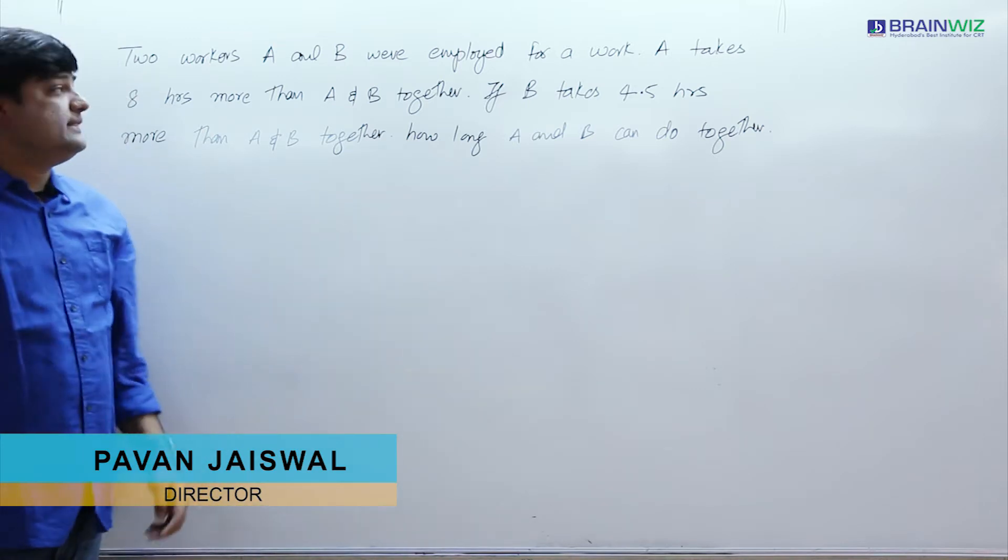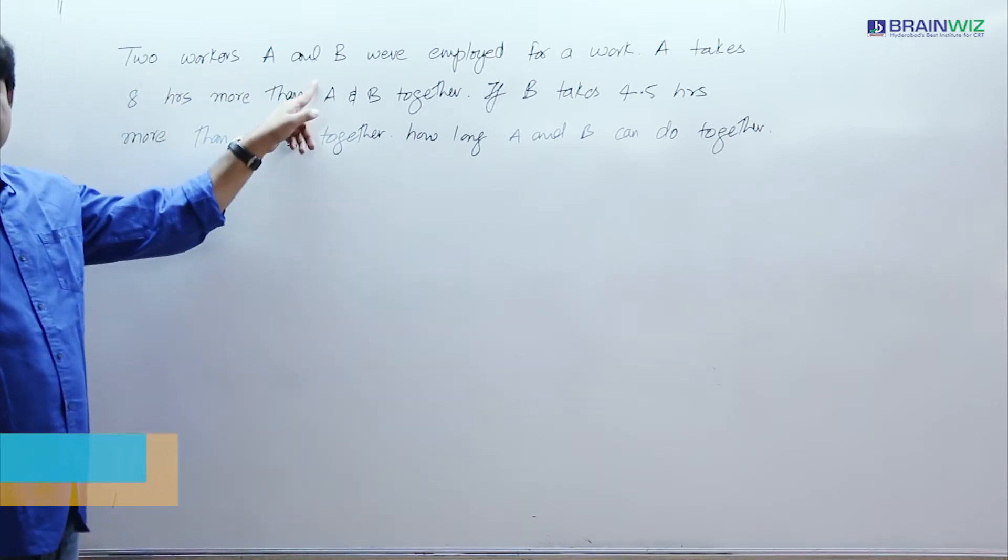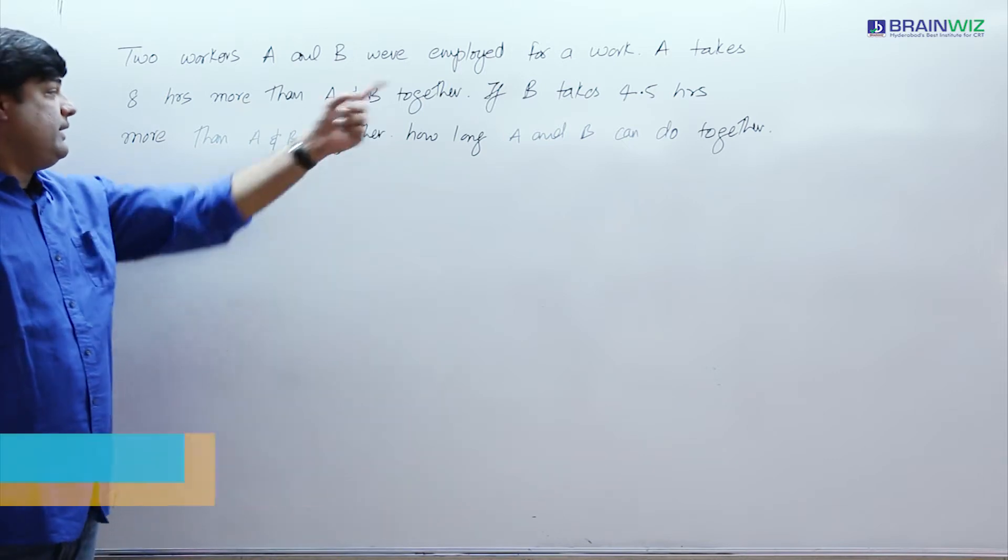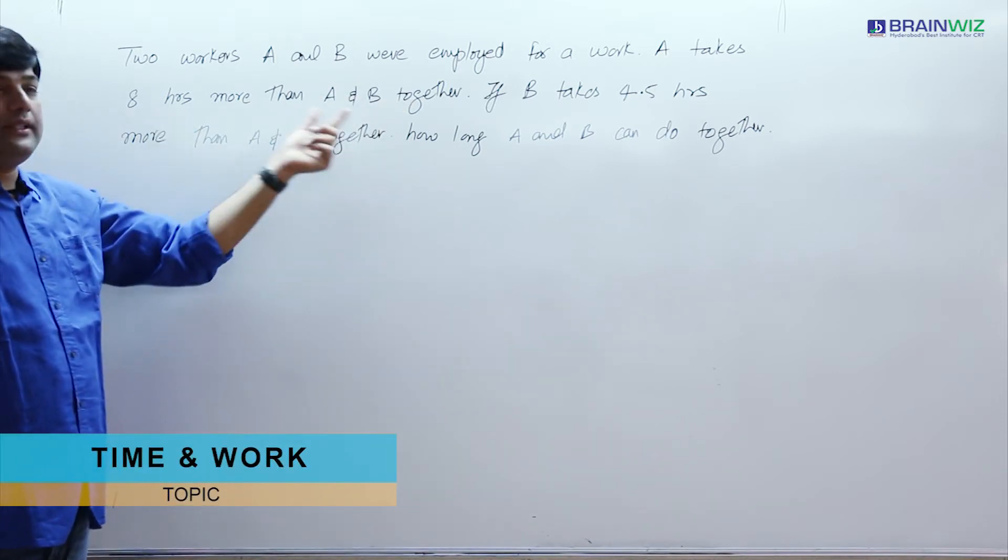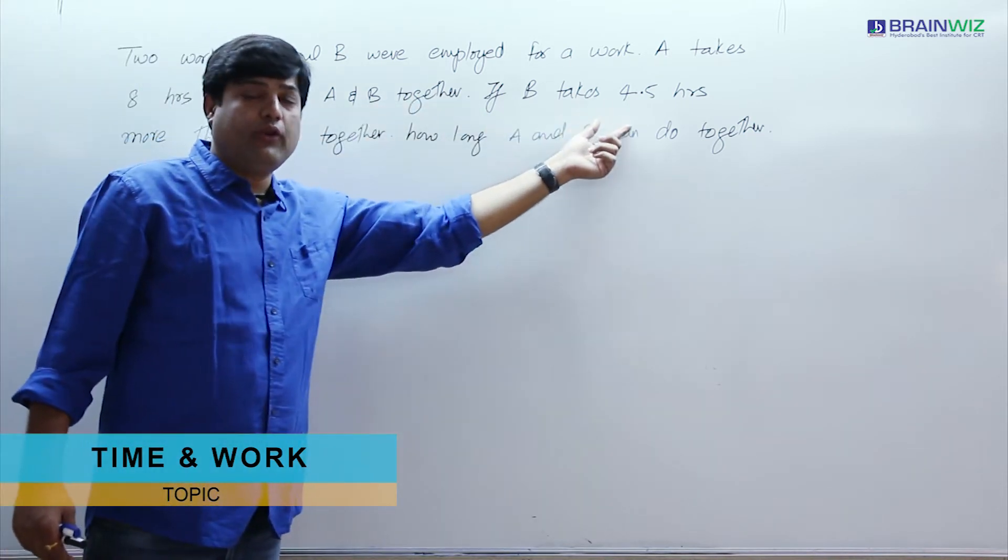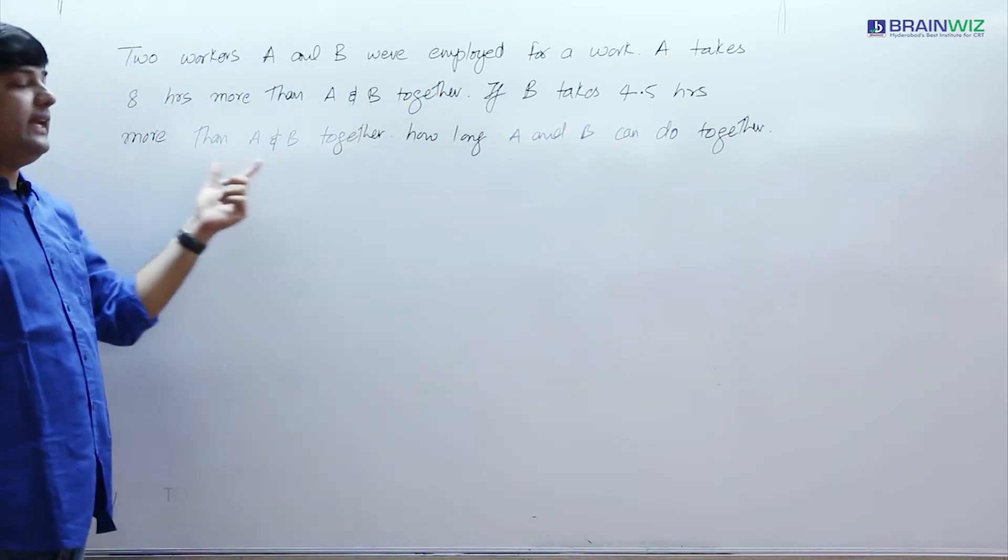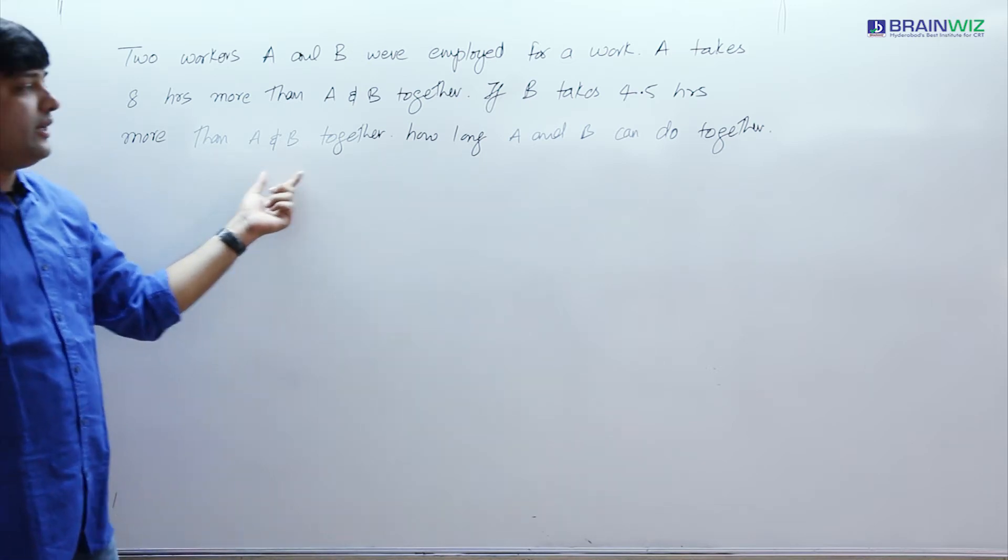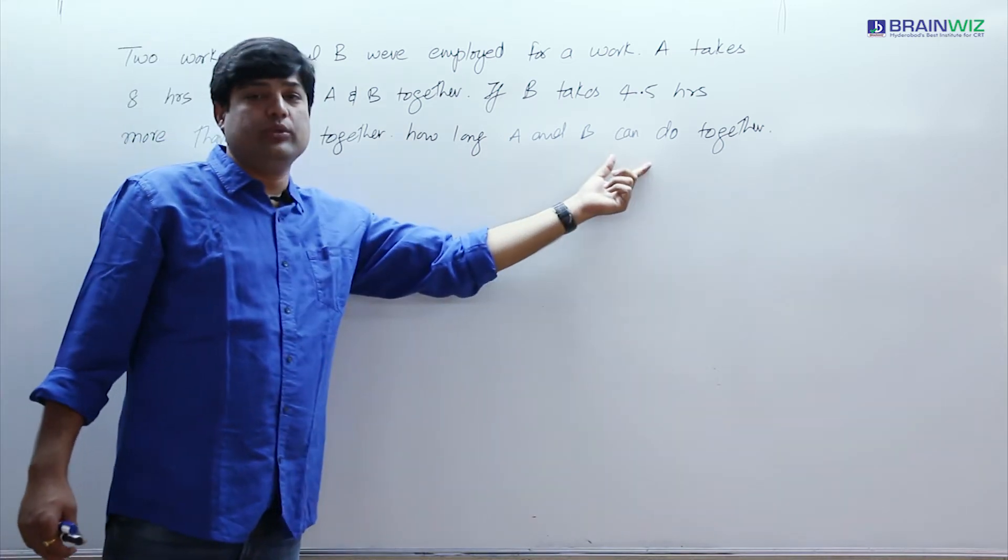In this question, two workers A and B are employed for a work. A takes 8 hours more than A and B together. B takes 4.5 hours more than A and B together. So we have to find out how long A and B can do the same work.